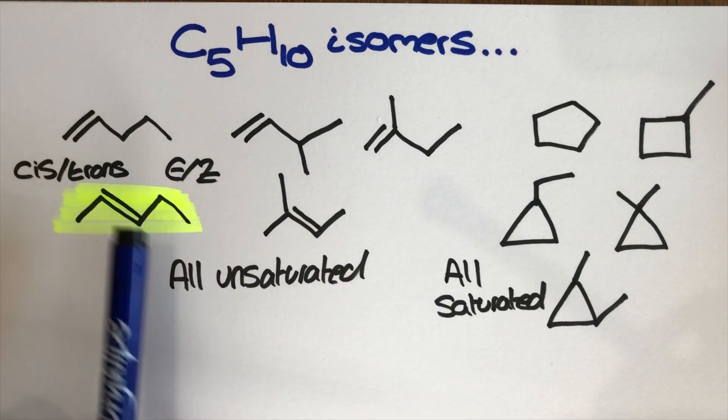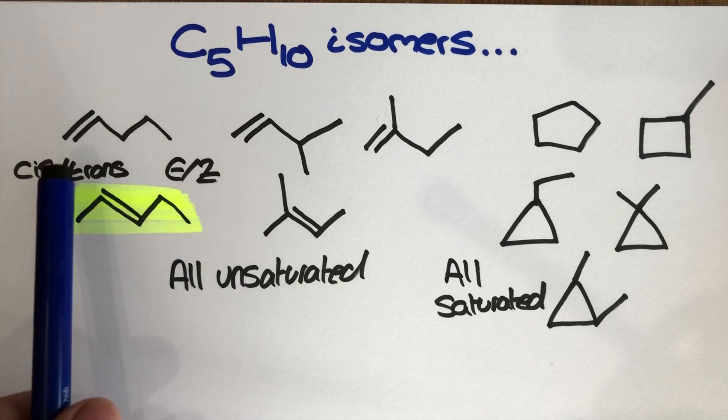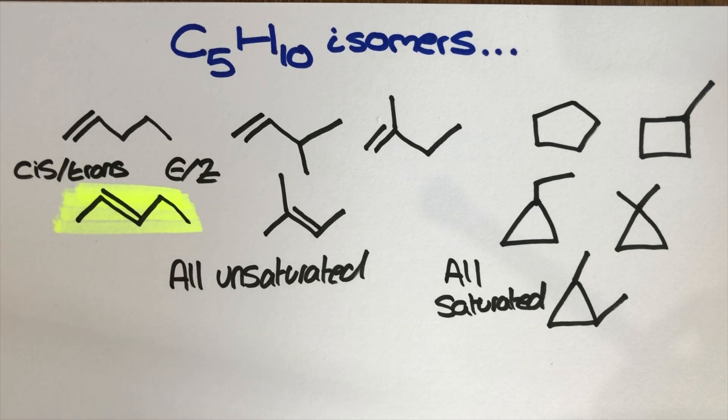I hope you got all of these isomers of C5H10 as well and I hope that you follow this up by looking at the differences between cis/trans and E/Z isomerism and maybe understanding why the pent-2-ene here is the only one on the page that has that.